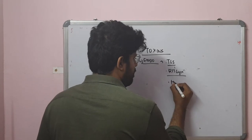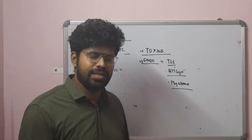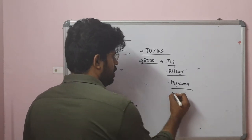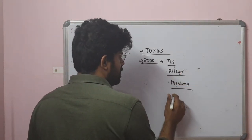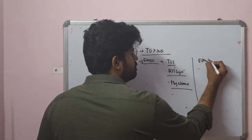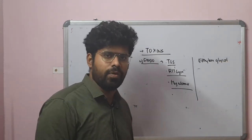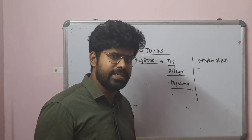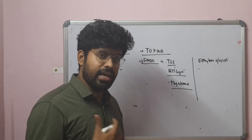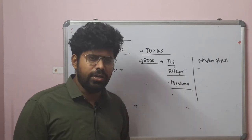Myeloma kidney: there is increased production of light chains, which cause light chain nephropathy resulting in acute renal failure. Exogenous toxins: ethylene glycol is used as antifreeze in automobile industries. It is metabolized to glycolic acid and glycolaldehyde, which are directly tubulotoxic and can cause intratubular obstruction, resulting in acute kidney injury.